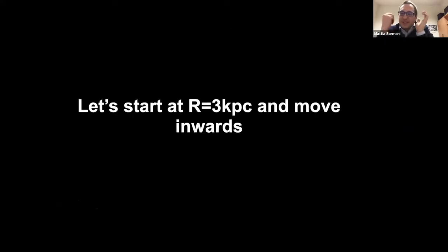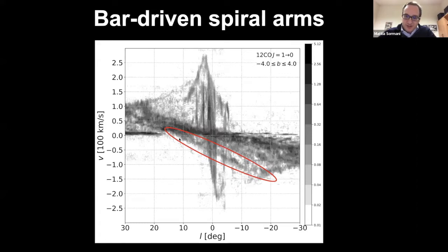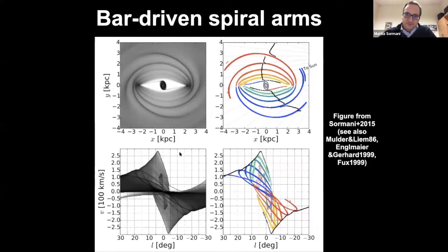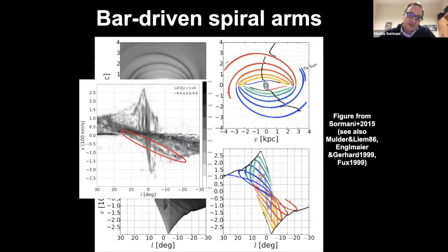Starting with bar-driven spiral arms: what is the feature called the 3-kiloparsec arm? When you run a simulation and project it to the LP plane, the spiral arms get mapped into these features. The modern interpretation is that the 3-kiloparsec arm is one of these spiral arms extending out of the bar — a very old result, with the first impressive simulation showing this being Mulder and Lim 1986.